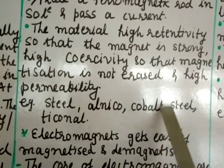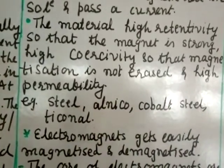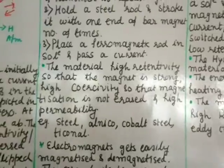The examples you can take is steel, alnico, cobalt steel, tyconal. These are the examples of the material with these conditions.